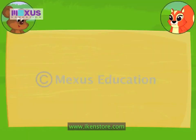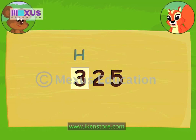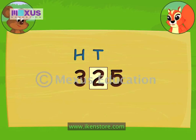Now consider this number. Can you tell me the place value of each digit? Yes, the digit 3 is in the hundreds place. Digit 2 is in the tens place. And the digit 5 is in the ones place.